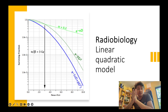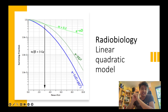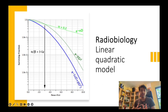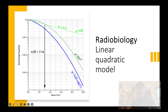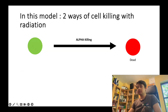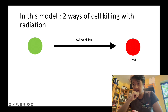The idea behind this model is to quantify how many cells are killed when radiation is delivered, whether it's a normal tissue or tumor. In this model you have two different ways of killing.